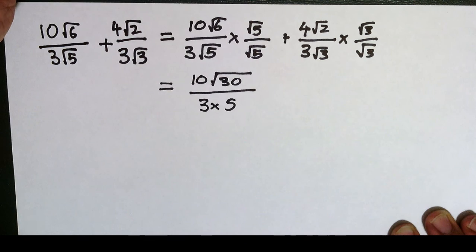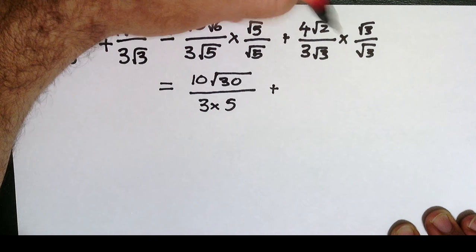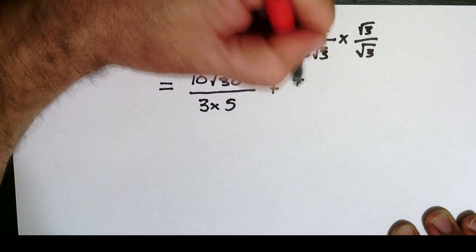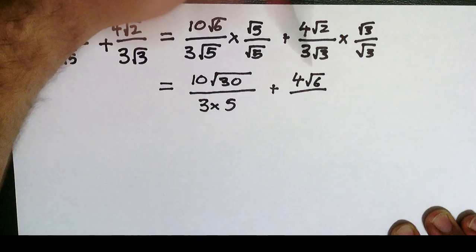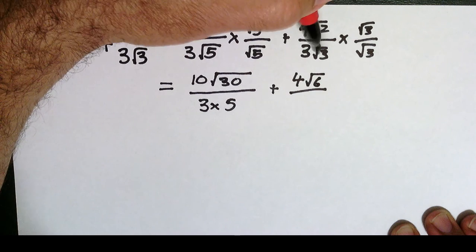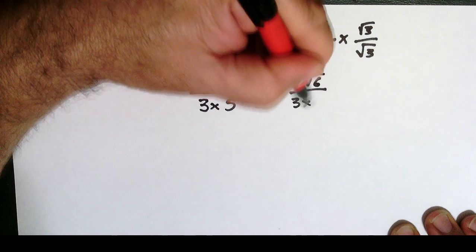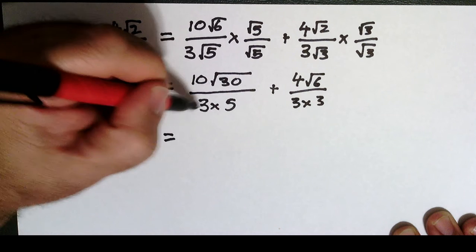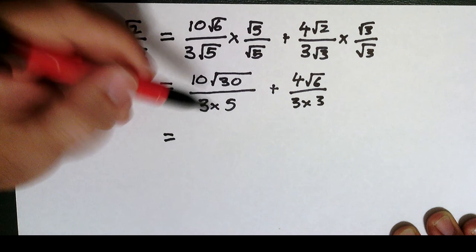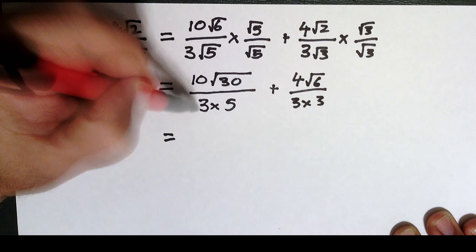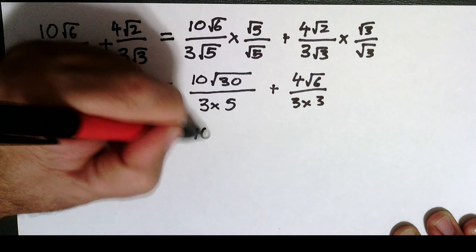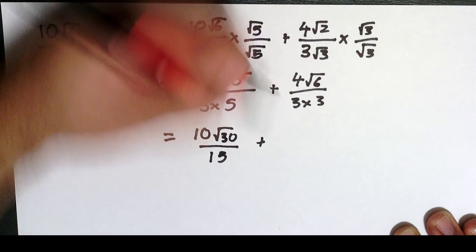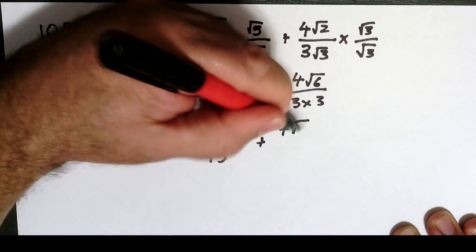Moving on to the second fraction, I've got 4 root 2 times root 3. Well, root 2 times root 3 is root 6, so I've got 4 root 6. On the bottom I've got 3 root 3 times root 3. Well root 3 times root 3 is 3, so I've got 3 times 3.